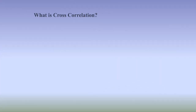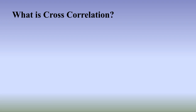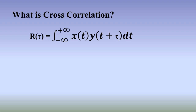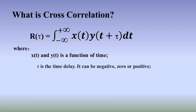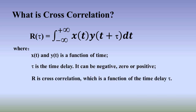What is cross-correlation? Cross-correlation is a measure of similarity of two series as a function of the lag of one relative to the other. It is defined by this formula, where x and y are functions of time t, tau is the time delay — it can be negative, zero, or positive — and R is the cross-correlation, which is a function of the time delay tau.